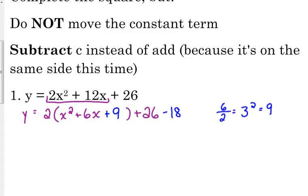So when we've completed the square first, we've got +18, but I've got to keep that balanced, so I've got to subtract 18 from the same side. And then we need to simplify. So factor the perfect square trinomial, x + 3 squared, and 26 - 18 is 8.